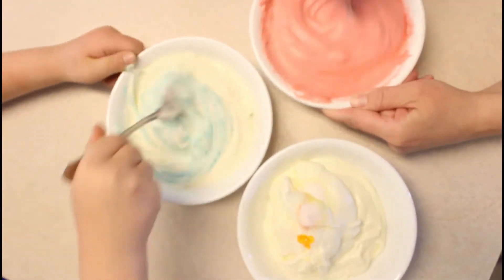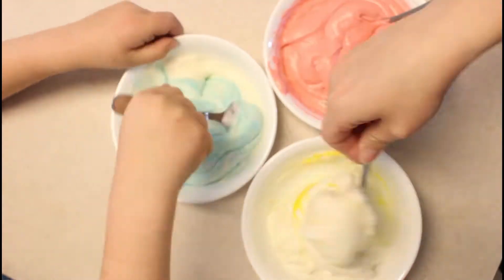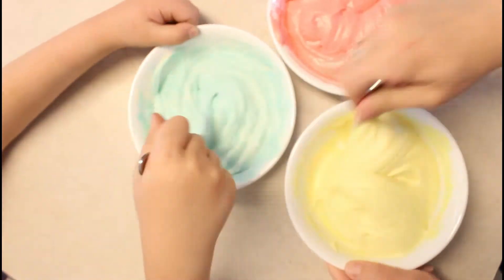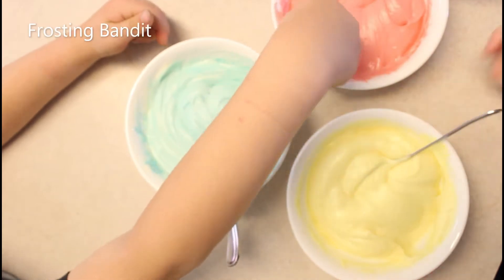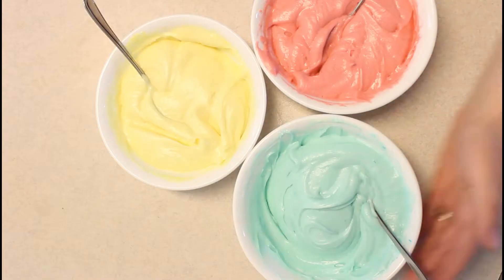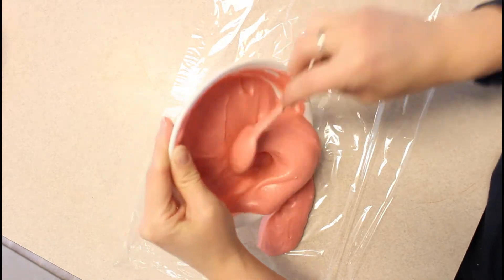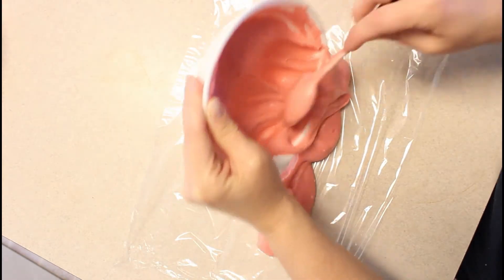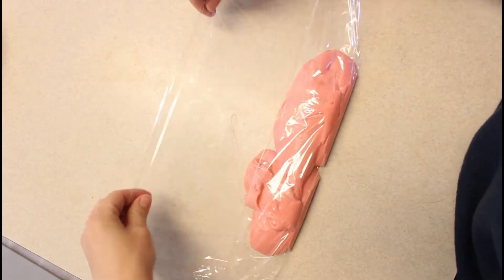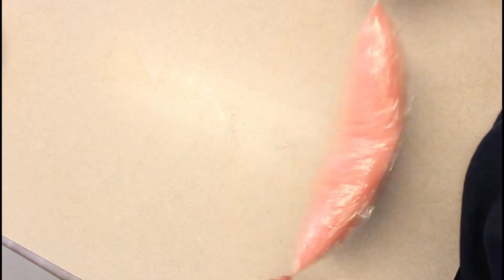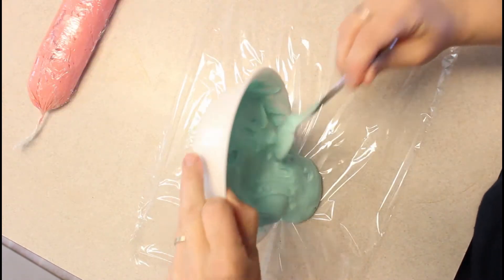Mix the frosting really well and it's great to have some really cute hands to help you. Pull out a piece of saran wrap and ladle one color of your frosting into the middle. Try and smooth it more than I did so you don't get air pockets. Wrap the saran wrap around the frosting and then spin it to close the sides. Repeat with the other two colors.